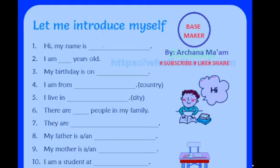Suppose your father is a teacher, then say 'My father is a teacher.' Your father is an engineer, then say 'My father is an engineer.' 'My father is a doctor' — whatever your father is, you have to mention that. Next line: 'My mother is a/an...' — 'My mother is a housewife,' 'My mother is a teacher,' 'My mother is an engineer' — whatever your mother is, you have to add and mention that.